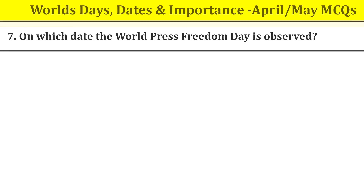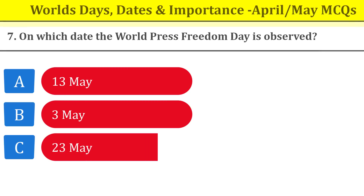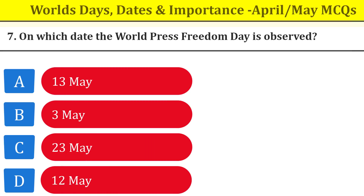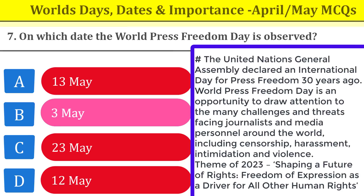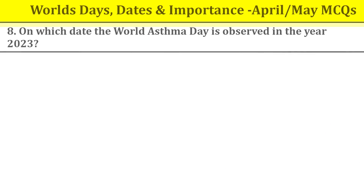Question number seven: on which date is World Press Freedom Day observed? It is on 3rd May. The United Nations General Assembly declared the International Day of Press Freedom 30 years ago. World Press Freedom Day is an opportunity to draw attention to the many challenges and threats facing journalism and media personnel around the world, including censorship, harassment, intimidation, and violence. The theme of 2023 was 'Shaping a Future of Rights: Freedom of Expression as a Driver for All Other Human Rights.'